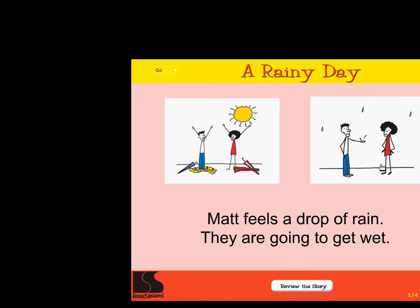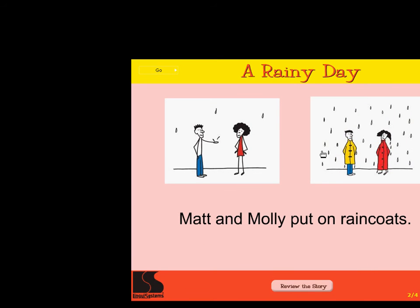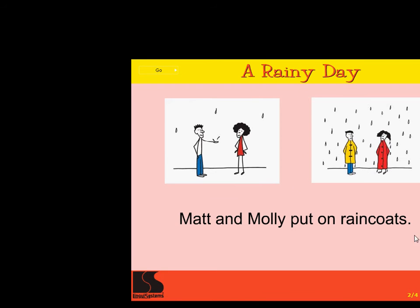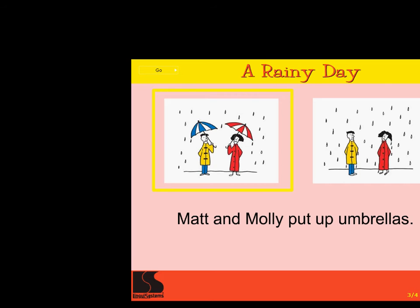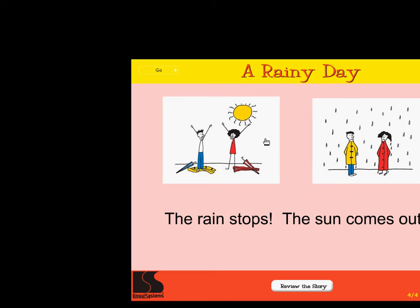Click on the picture that matches these words: Matt feels a drop of rain. They are going to get wet. Excellent. Click on the picture that matches these words: Matt and Molly put on raincoats. Correct. Click on the picture that matches these words: Matt and Molly put up umbrellas. Super. Click on the picture that matches these words: The rain stops. The sun comes out. Right on.